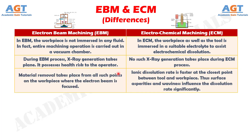Number 8: In electron beam machining, material removal takes place from all such points on the workpiece where the electron beam is focused, whereas in electrochemical machining, ionic dissolution rate is faster at the closest point between tool and workpiece. Thus surface asperities and waviness influence the dissolution rate significantly.